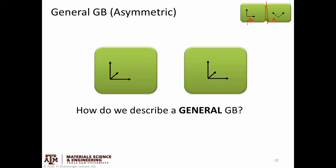The most general case is called an asymmetric grain boundary. That's where the rotation on one side is arbitrarily relative to the rotation on the other side — they don't necessarily meet any special conditions. So this is a general grain boundary, and it's an asymmetric grain boundary.